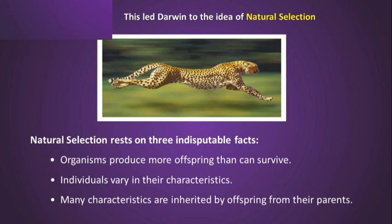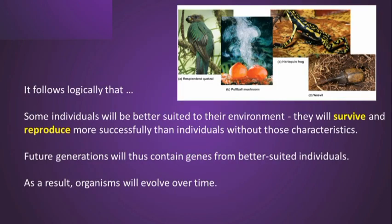This led Darwin to the idea of natural selection, which rests on three principal facts. First, organisms produce more offspring than can survive. Second, individuals vary in their characteristics, so offspring are not identical to their parents. Third, through the process of genetics, offspring inherit characteristics from their parents. Therefore, some individuals will be better suited to their environment, better adapted to survive, and they can pass their genes to future generations to generate better-suited individuals. As a result, organisms evolve over time to become better suited to the environment.